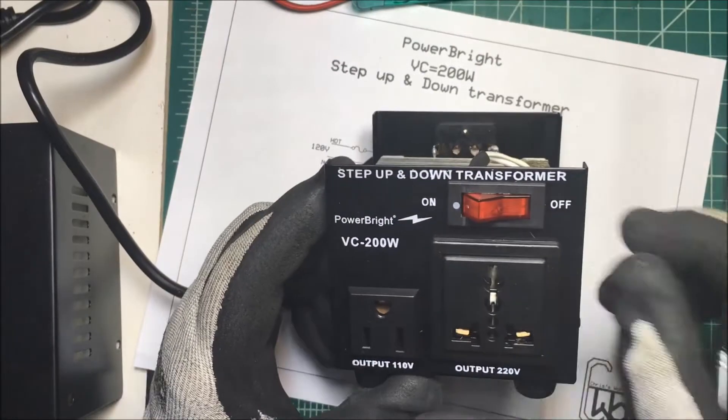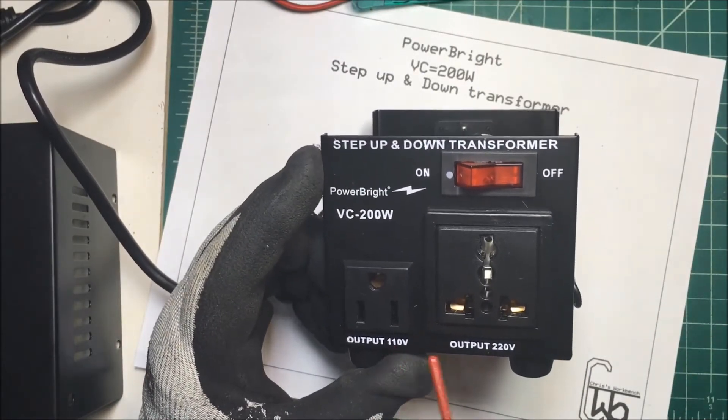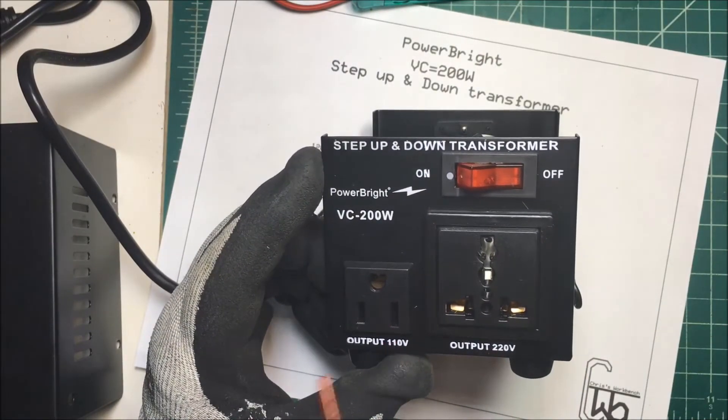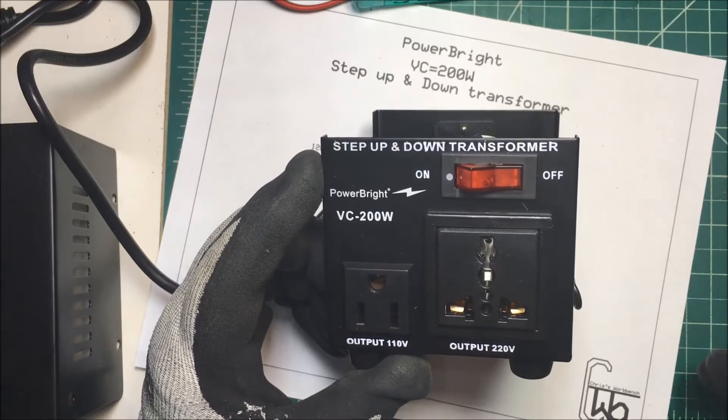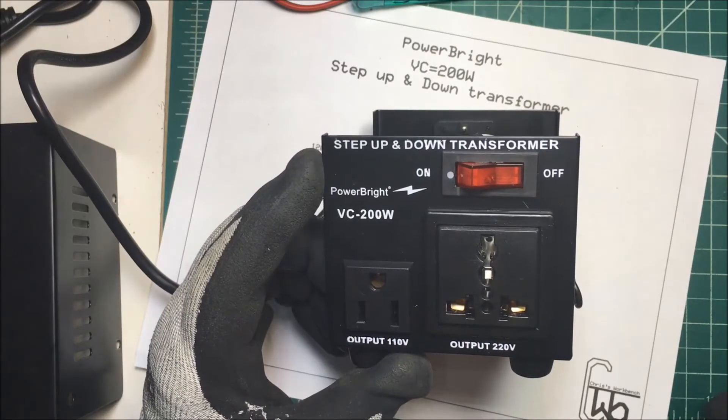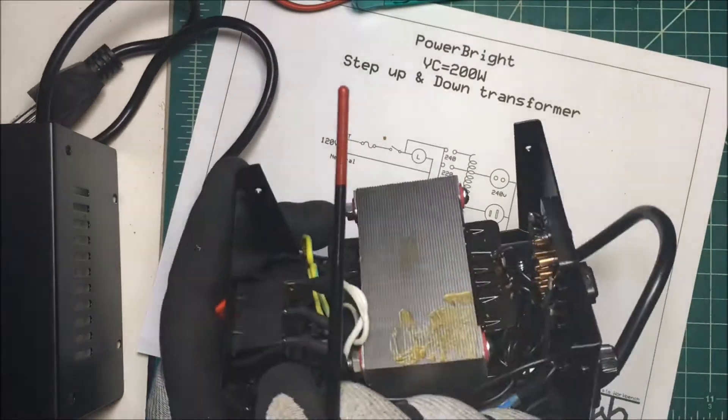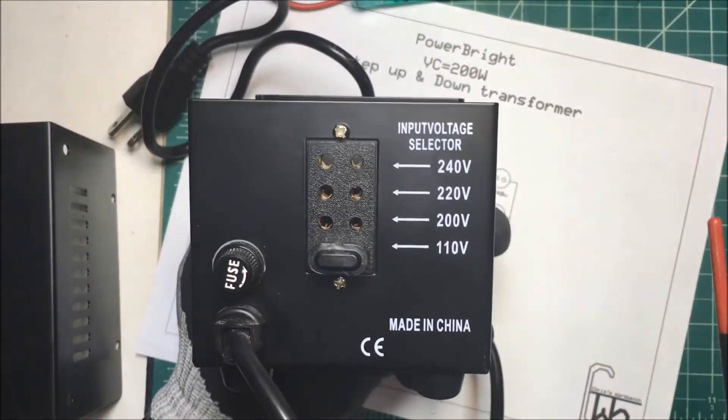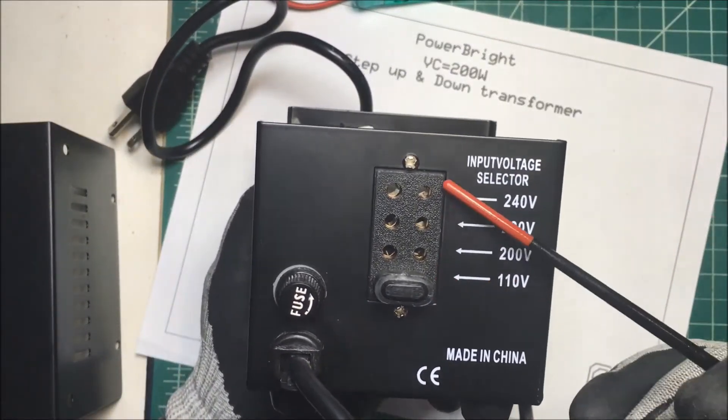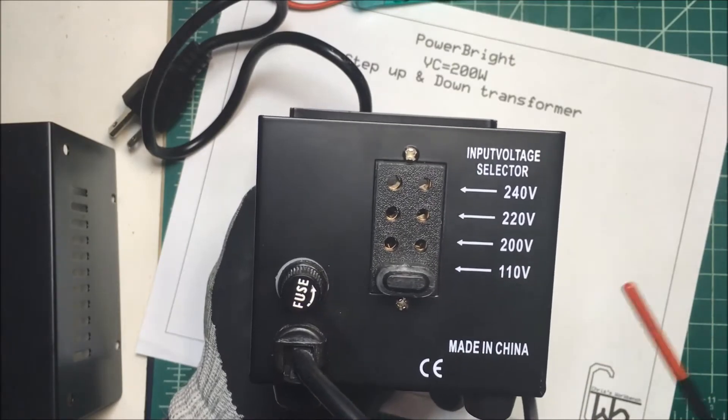On the front it has 110 and 220, but my voltage here is going to be 120 and it's going to be 240 over here. It's got an on-off switch and on the back it has a fuse and this input voltage selector. Right now I have it on 110 volts.